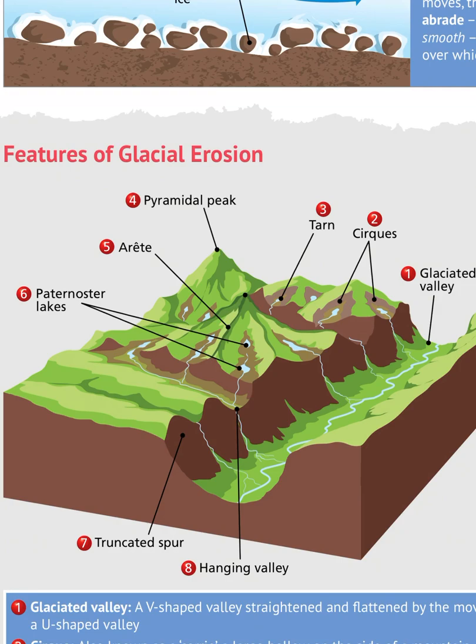Number four is a pyramidal peak. If you have three or more cirques or corries back to back, there will be a high area of uneroded land between them in a peak shape. This is a steep-sided, pyramid-shaped mountain that has been eroded on many sides by cirques or corries.